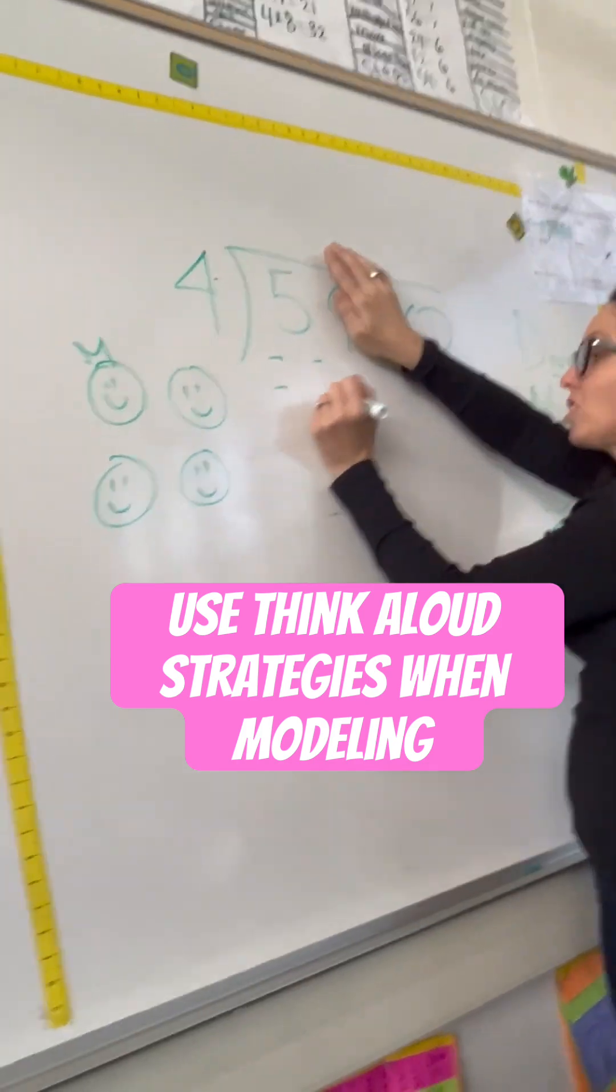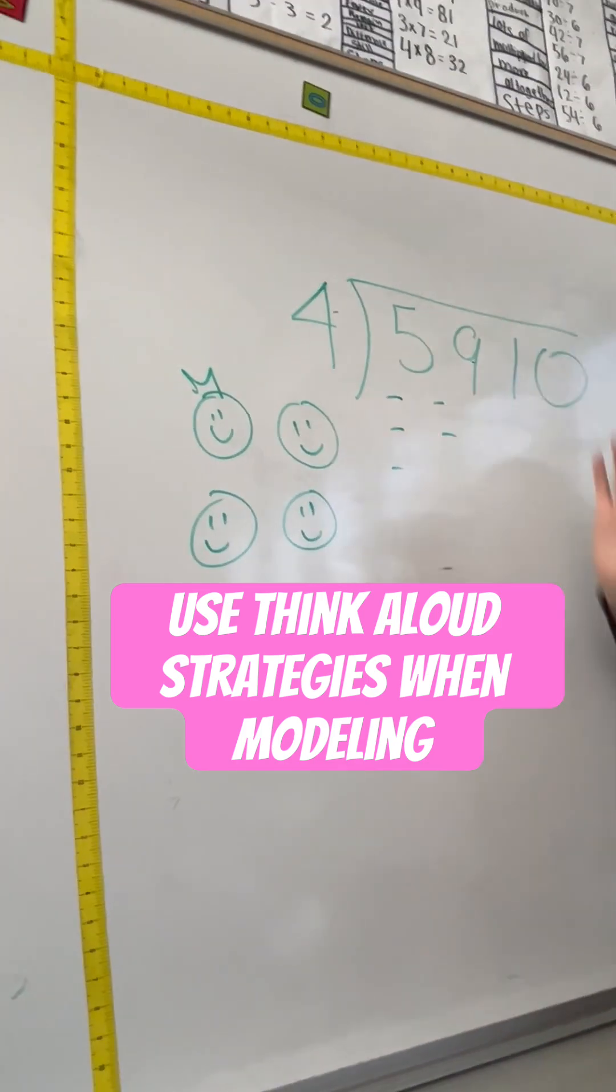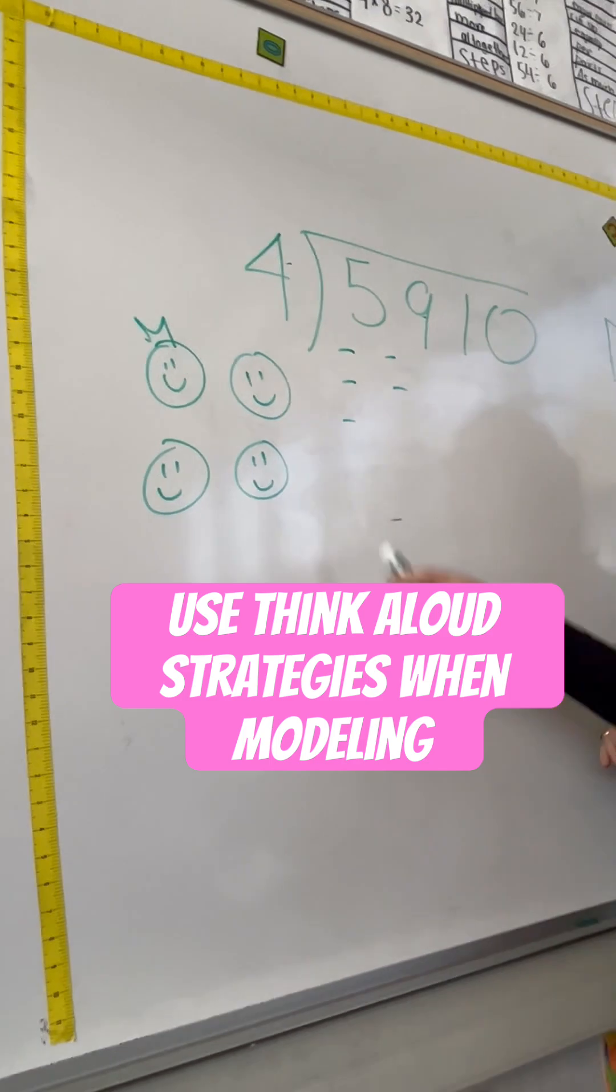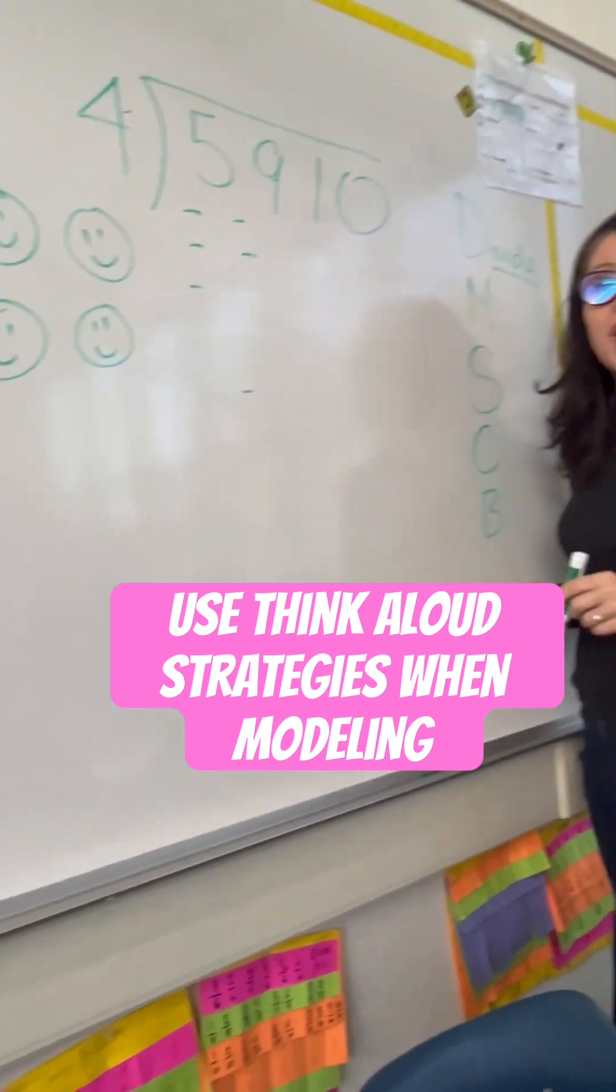So, you have 5 chicles. 4 can go into 5 once. How many friends are going to get an equal share? That's what we're doing.